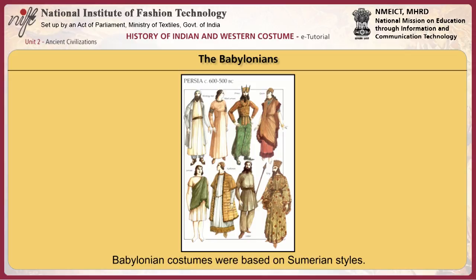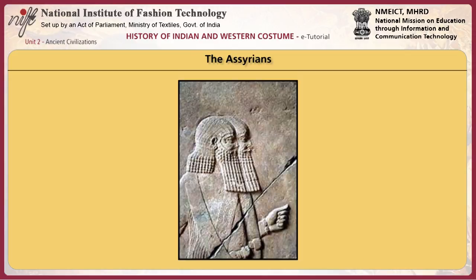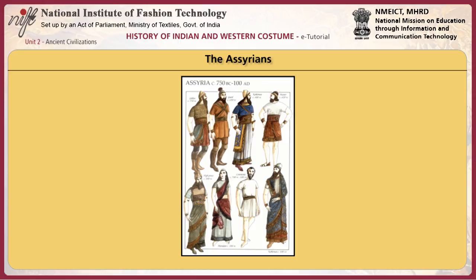We now move on to the Assyrian civilization. The Assyrians were a warring kingdom intent on conquering land and extending their empire. They were renowned for their military prowess and glorification of war through their art. Assyrians continued the Babylonian tradition of costumes, with variations on styles seen within the basic costume components of the tunic and layers of fringed shawls. The royal cloak was wrapped like a spiral several times around the body. The high priest's apron was a richly patterned garment tied around the waist with the opening at the front.